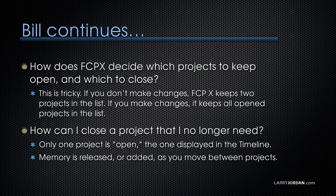Bill continues: so how does Final Cut decide which projects to keep open and which to close? This is tricky. I discovered it's less self-evident than you might think — I spent a couple hours yesterday playing with this. If you don't make changes to a project and just simply open it in the timeline and look at it, Final Cut will keep two projects in the list. If you make changes to a project, even though Final Cut saves those changes instantly, it keeps all open projects in the list.